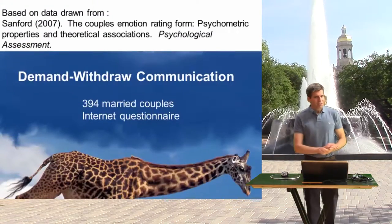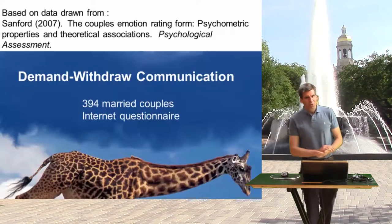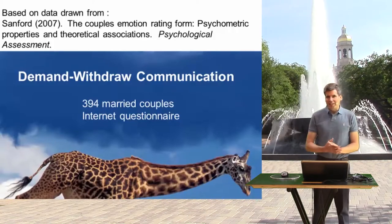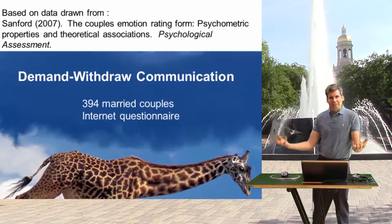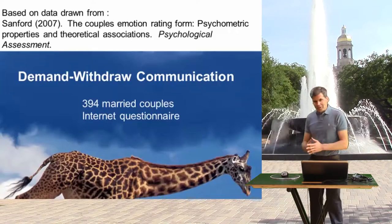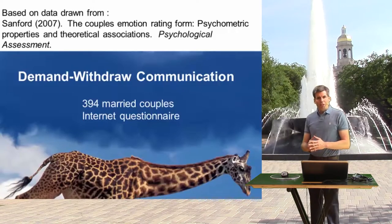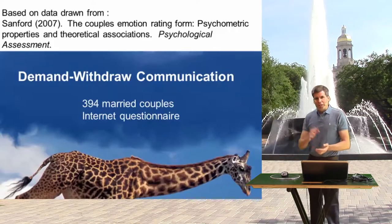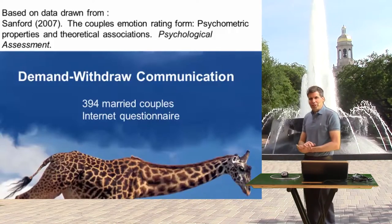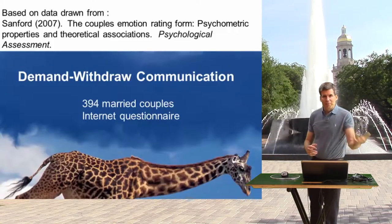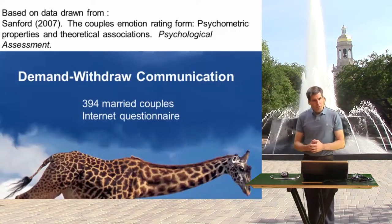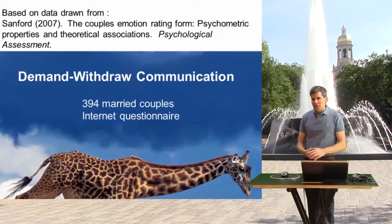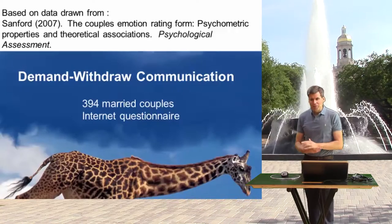Welcome. This is information for Unit 3. Previously I looked at an example involving two independent samples, where we were looking for differences between two groups in their means — one group that had received premarital education, another that did not, and we were looking for differences in their mean levels of commitment or satisfaction.